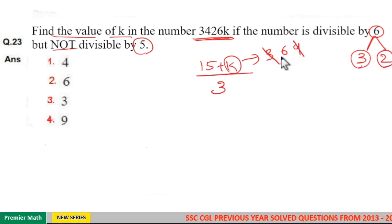So 3 and 9 cancel. Your answer is 6. k equals 6, option 2 is your answer.